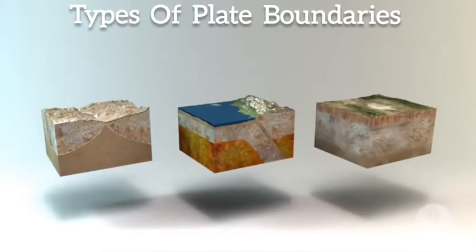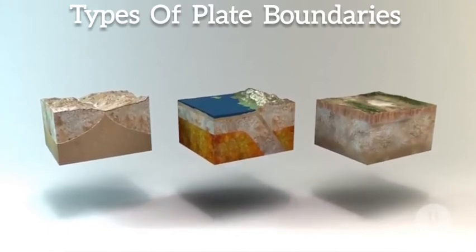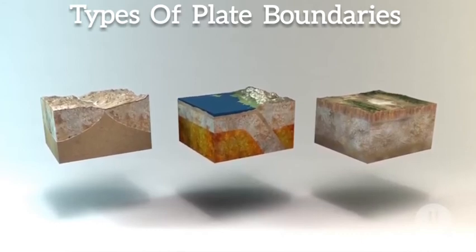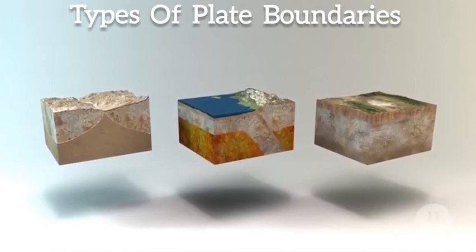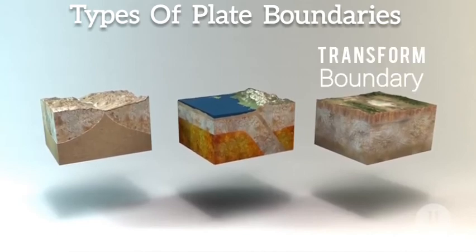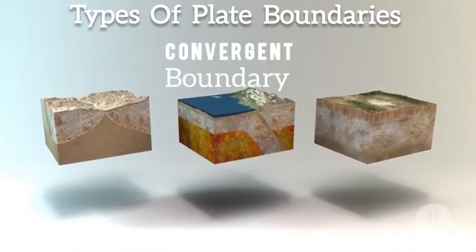Let's look at the classification of plate boundaries, sometimes referred to as types of plate boundaries. There are three types of plate boundary, classified according to the direction of plate movement or mode of interaction: transform plate margin, divergent plate margin, and convergent plate margin.